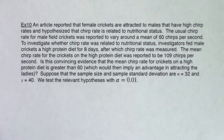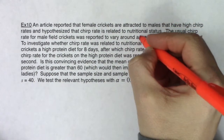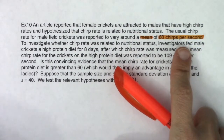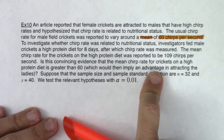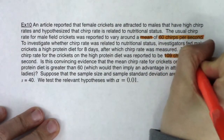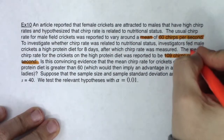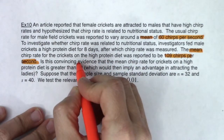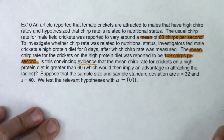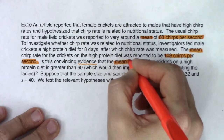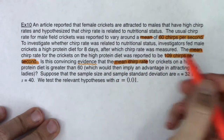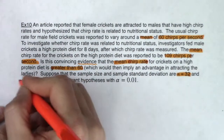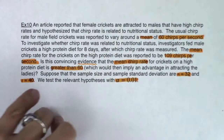The first thing that stood out to me was the word 'mean' — a pretty clear indication that I'm in mean land. I also saw 60 chirps per second, and as soon as I saw units I knew I wasn't dealing with proportions. I saw another average — 109 chirps per second — so I'm seeing two averages. As soon as I saw the word 'evidence' I knew I was going to run a hypothesis test. I saw 'greater than 60,' and they gave me sample size 32 and sample standard deviation 40 with a one percent alpha.